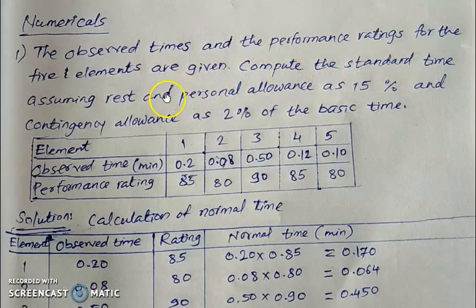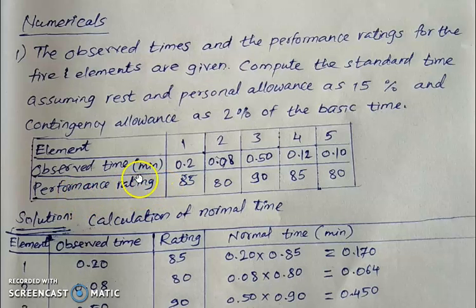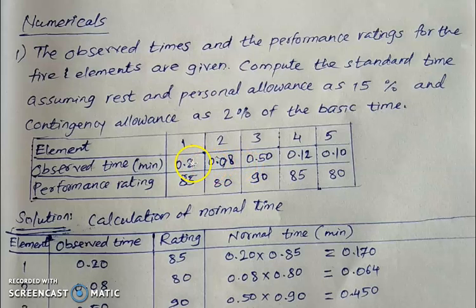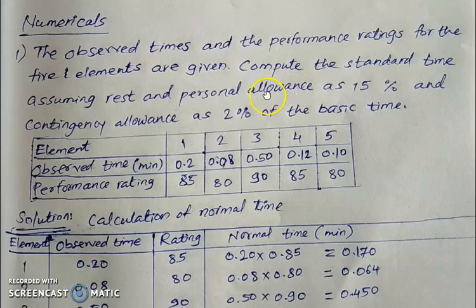Compute the standard time assuming rest and personal allowance as 15% and contingency allowance as 2% of basic time. Element-wise, these are the elements of a work cycle. For each element, the observed time is given in minutes — this is the flyback timing — and the performance rating is also given. Rest and personal allowance means relaxation allowance is 15% of basic time, and contingency allowance is 2% of basic time. So to calculate allowances in time, we must first calculate basic time.